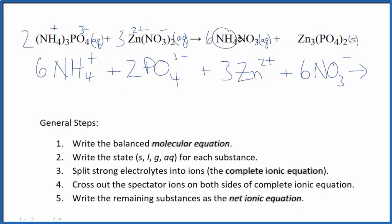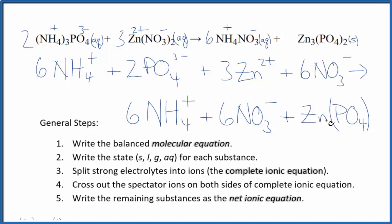For the products, we have the ammonium ion again, that's plus, the nitrate is minus, 6 ammonium ions, just like the reactants, plus 6 nitrate ions. And then the zinc phosphate, we don't split that up because zinc, that's a solid. So we don't split solids apart in net ionic equations. So that just says Zn3(PO4)2. So this is the complete ionic equation.